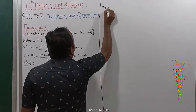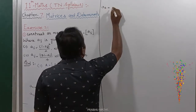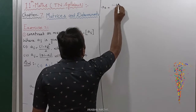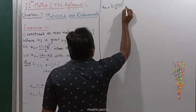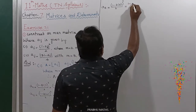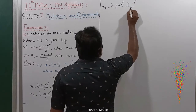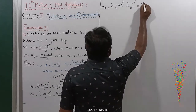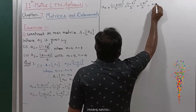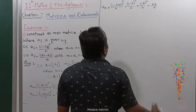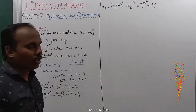A₁₃: i value is equal to 1, j value is equal to 3. So (1 minus 2 into 3) whole square divided by 2, equal to (1 minus 6) whole square divided by 2, equal to (-5) whole square divided by 2, equal to 25/2. The first row is now completed. Next we go to the second row.